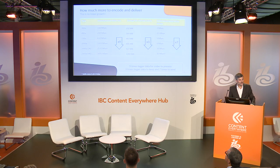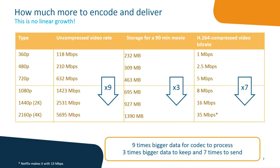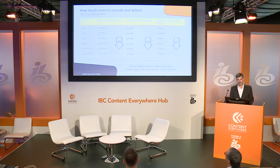So if you are a content provider, what does it mean? You are used to encoding your videos at typical 360p, 480p, 720p — that's what everyone does. But if you want to move to the high-definition and 4K world, it's not just a small change. We are speaking of nine times more uncompressed video to store. If you compress it, it's three times more video on the encoded side. And for bitrate, you need seven times more bandwidth if you want to propose all those bitrates.